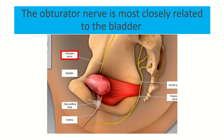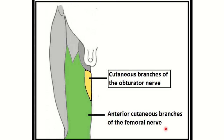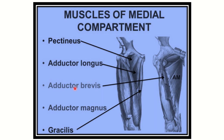Here we can see the cutaneous branch of the obturator nerve supplying part of the thigh. The obturator nerve supplies the following muscles: pectineus, adductor longus, adductor brevis, adductor magnus, and gracilis. So the medial compartment — also called the adductor compartment — of the thigh is supplied by the obturator nerve.